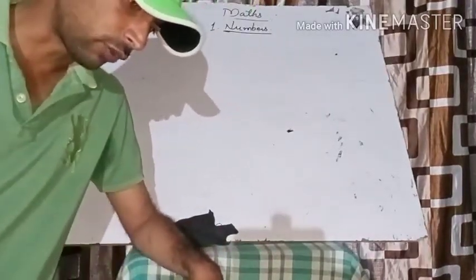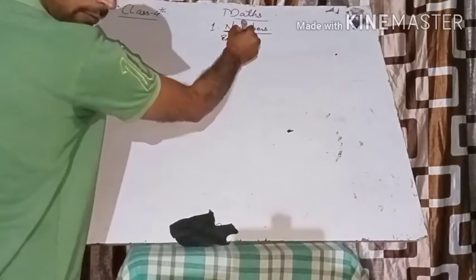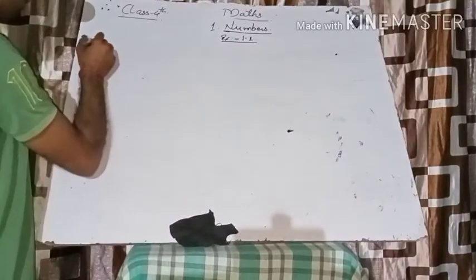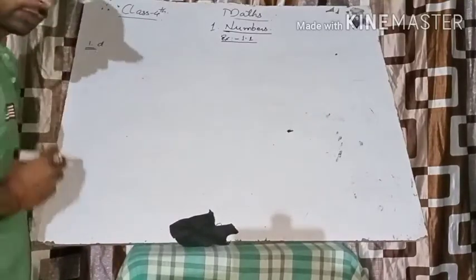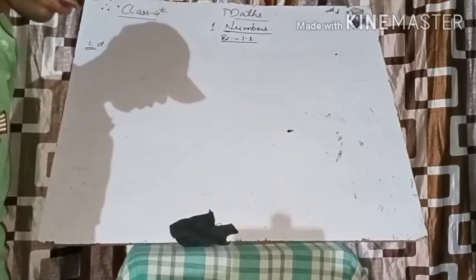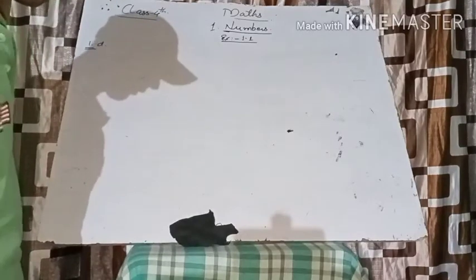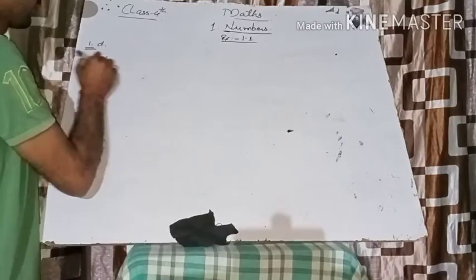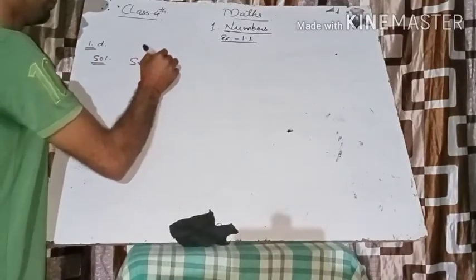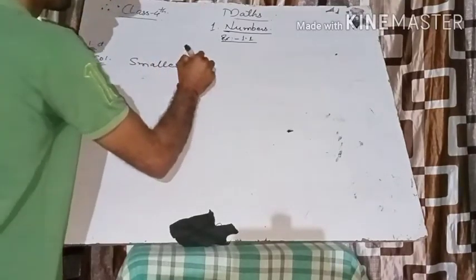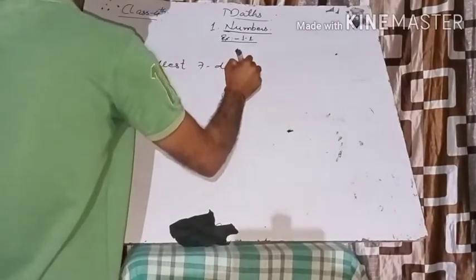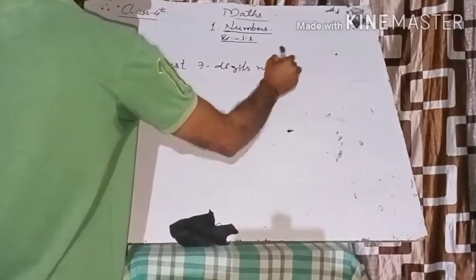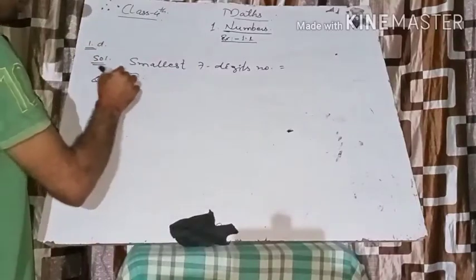Now let's do Exercise 1.1. First, answer the following: what are the smallest and greatest seven-digit numbers? So we need to find the smallest seven-digit number and the greatest seven-digit number.